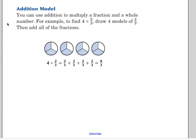Another strategy you can use is the addition model. You can use addition to multiply a fraction and a whole number. For example, to find four times two thirds, draw four models of two thirds, then add all of the fractions. This is often called repeated addition if you're multiplying. So, two thirds plus two thirds plus two thirds plus two thirds, you get eight thirds. And then, of course, you're going to need to simplify that. Eight divided by three is two with a remainder of two thirds. So, two and two thirds. I don't recommend this model because it works easily here when your numbers are smaller, but what if you're doing like 37 times four fifths? That would be a pretty big addition problem.